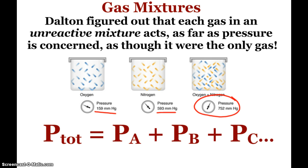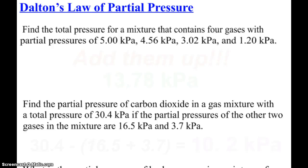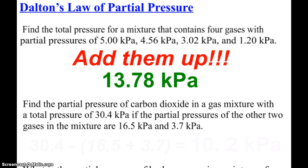And so on the AP packet, you'll see this lovely equation, that your total pressure for a mixture of gases is simply the addition of all their partial pressures. So here's a couple simple practice problems. How would you find the total pressure of a mixture containing four gases? You would simply add up those pressures, that would be the combined pressure, the total.